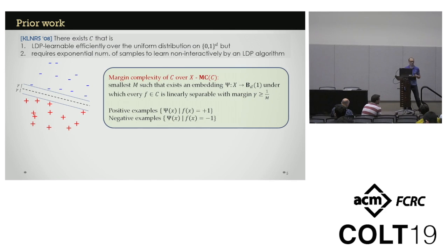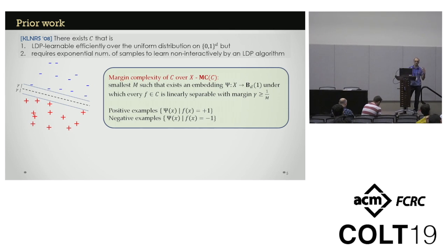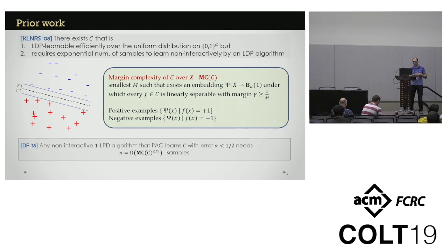We addressed this problem with Amit and showed that having a sufficiently large margin is necessary for the existence of an efficient non-interactive protocol. Specifically, for any class of functions you can define margin complexity, which measures how well that class can be embedded into linear classifiers with margin — the margin complexity being the inverse of the largest achievable margin under this embedding. We showed that for any non-interactive, one-round locally differentially private algorithm that PAC learns an arbitrary class C, any non-trivial error requires a number of samples that scales polynomially with this margin complexity. The margin complexity can be exponential for some learnable classes.